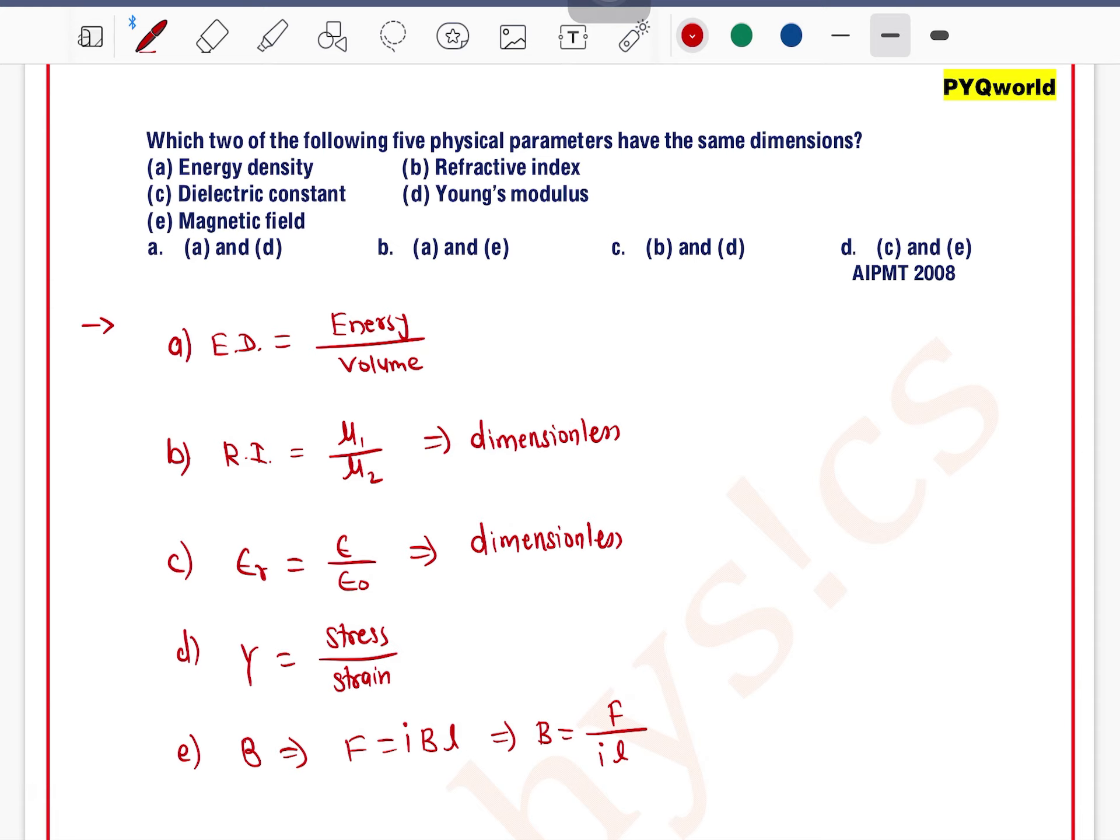Energy density dimension: energy per unit volume. Energy is M1 L2 T minus 2 divided by L3, so this will be M1 L minus 1 T minus 2. This is the dimension of energy density.